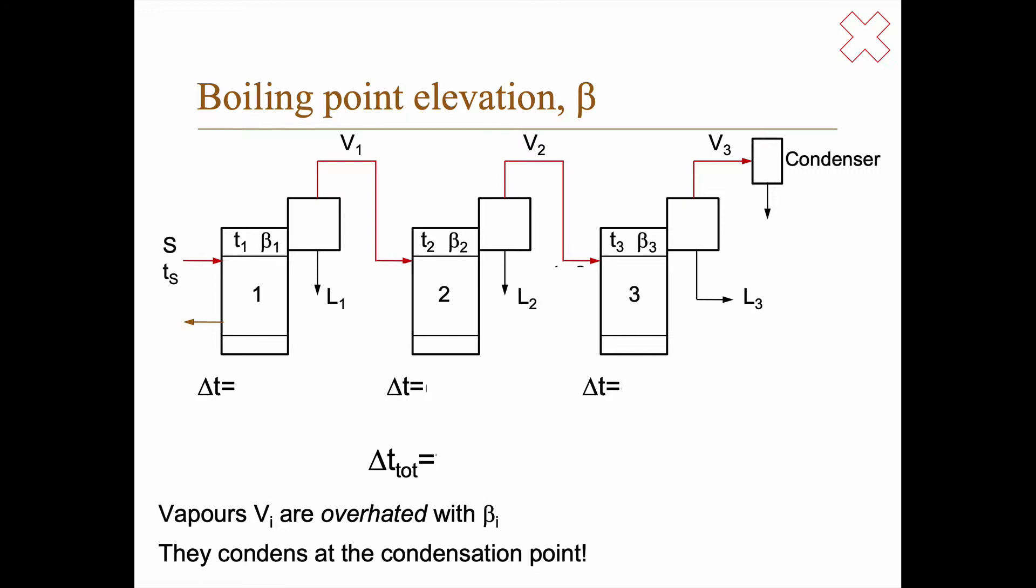To understand what happens let's follow this flow V1 here. When it goes out it has a temperature T1 but that's overheated with β1 degrees. So this doesn't condense at T1 degrees. It condenses at T1 minus beta 1, minus the boiling point elevation. And the same is true for V3. It condenses as T3 minus β3. So if the temperature of the condenser is Tcond then that is the same as T3 minus beta 3.